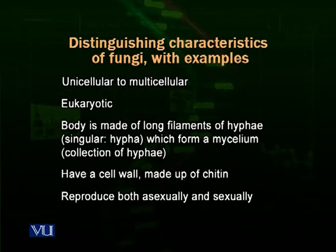Fungi reproduce both by sexual and asexual means. Normally they reproduce by asexual means. As eukaryotes, they carry out mitosis to produce the next generation. But sometimes they also sexually reproduce, and their life cycle consists partly of asexual reproduction and partly of sexual reproduction. We have a look at their life cycle in a diagram.